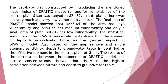The DRASTIC Index for aquifer vulnerability of the central plane of Galen ranged from 82 to 182. In this plane, there were no very high or very low vulnerability classes. The final map shows that 48.64% of the area has high vulnerability, 50.55% has medium vulnerability, and only 0.81% has low vulnerability.